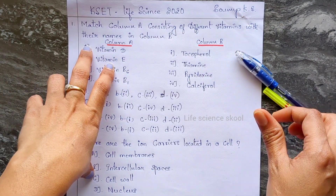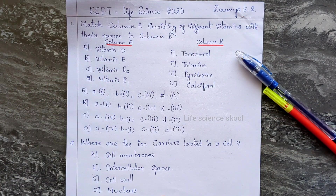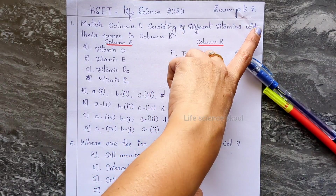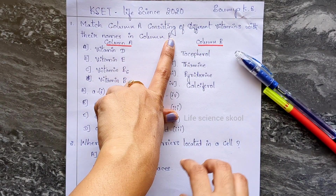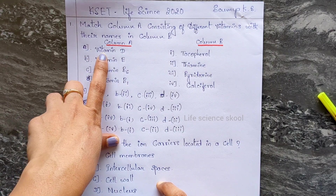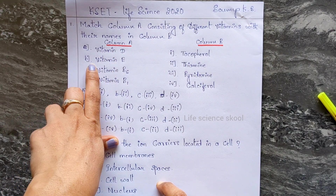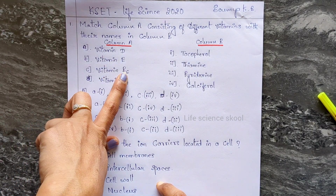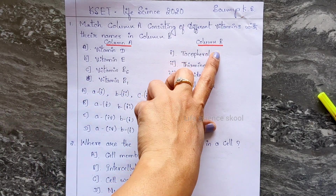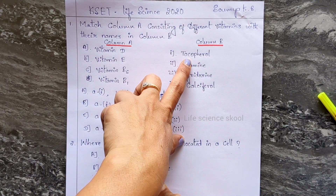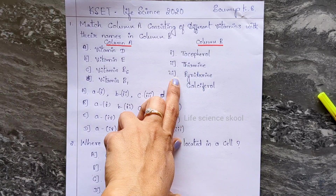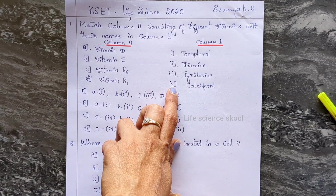The question is: match column A consisting of different vitamins with their names in column B. Column A is: option A is vitamin D, option B is vitamin E, option C is vitamin B6, option D is vitamin B1. Column B options are: first one tocopherol, second one thiamine.